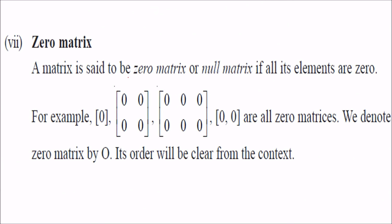A zero matrix, also known as a null matrix, is one where all elements are 0. It is represented by a capital O.